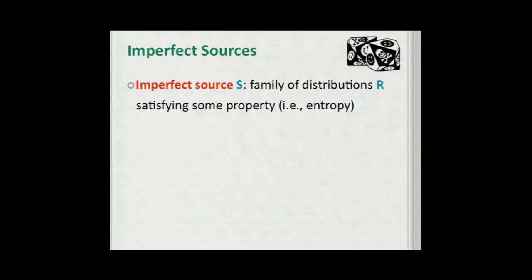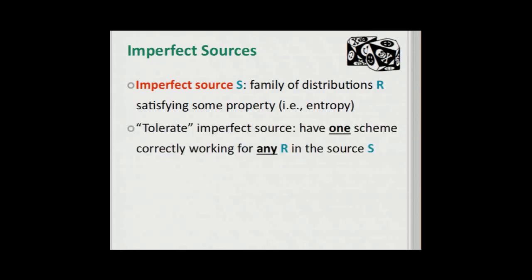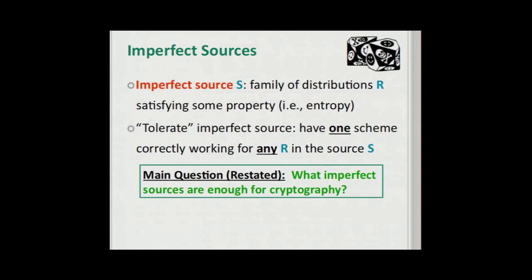What do we mean by imperfect randomness? I'm going to define an imperfect randomness source roughly by a family of distributions satisfying some property — for example, that they have some entropy. And to tolerate an imperfect source means to have one scheme that works for any distribution in this family. So if we restate the question, what we really mean is: what imperfect sources are enough to do cryptography?